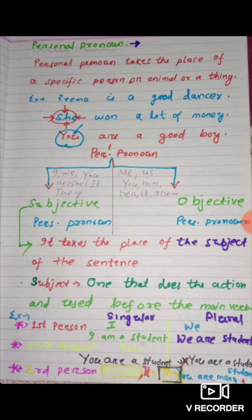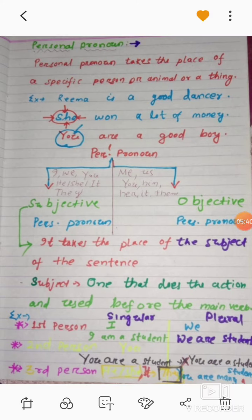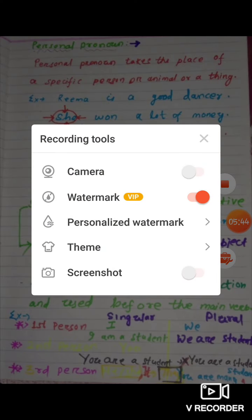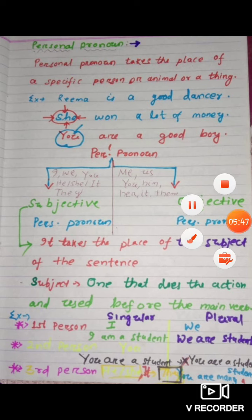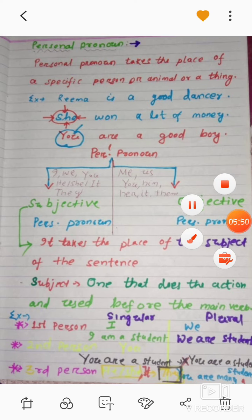For example: Rima is a good dancer. Here, Rima is a noun — the name of a girl. So in place of Rima we can use 'she.' The sentence will be: She owns a lot of money. Here 'she' is a personal pronoun. Another example: You are a good boy. Here 'you' is the personal pronoun.